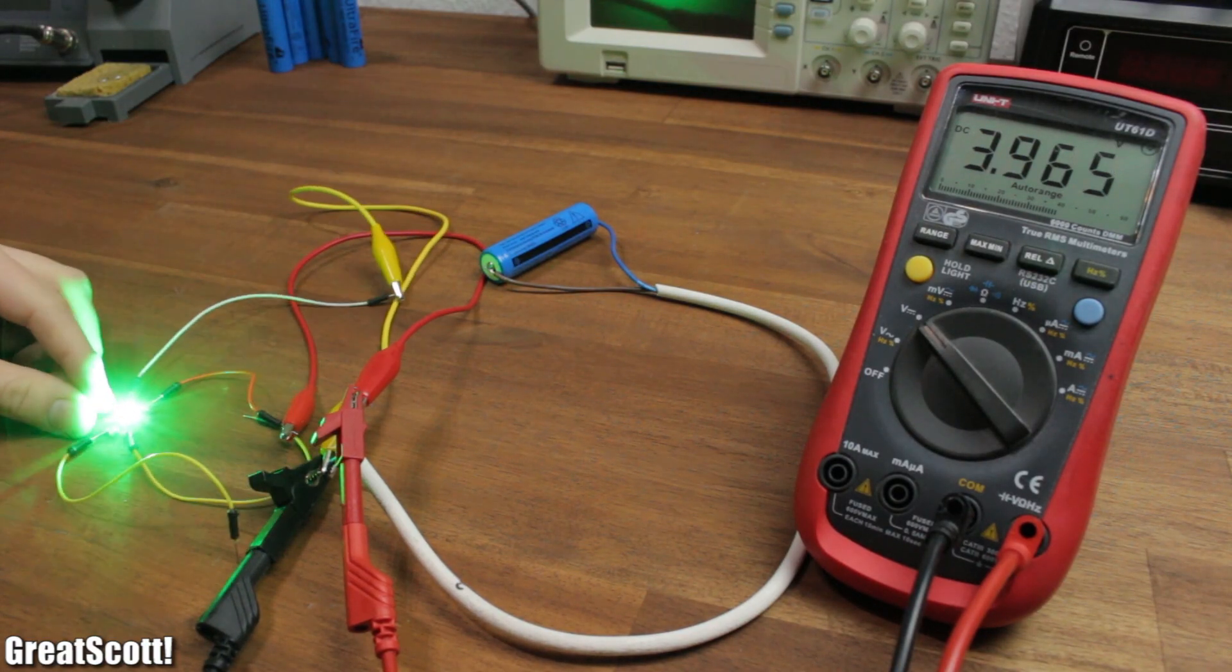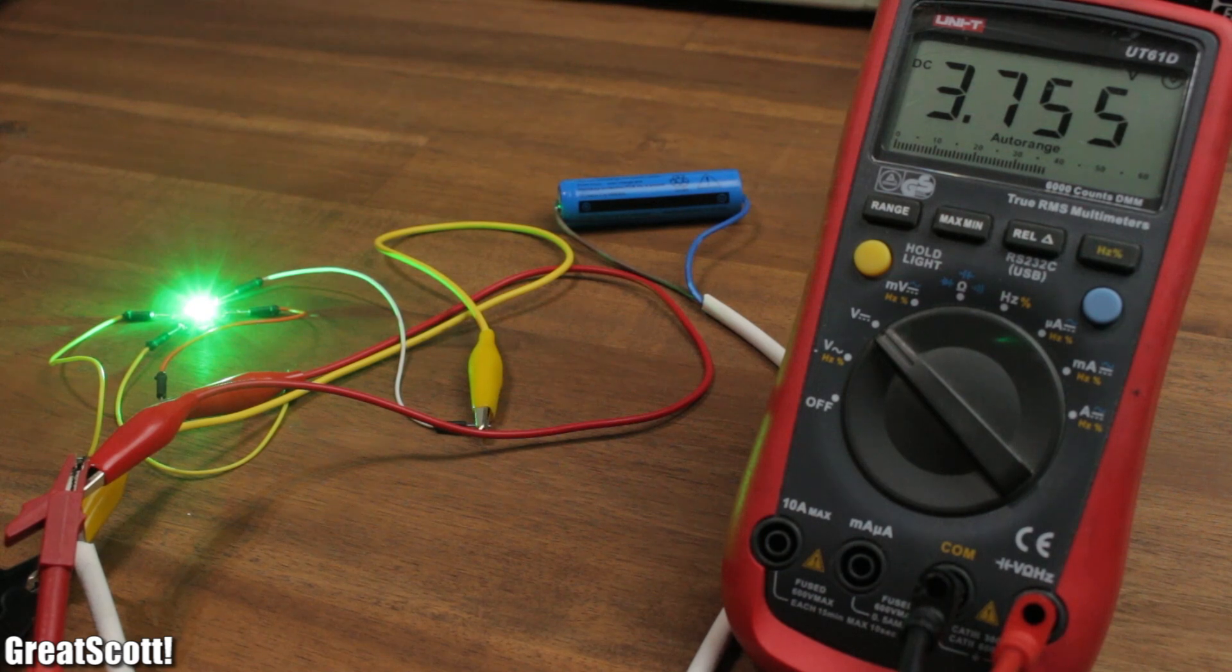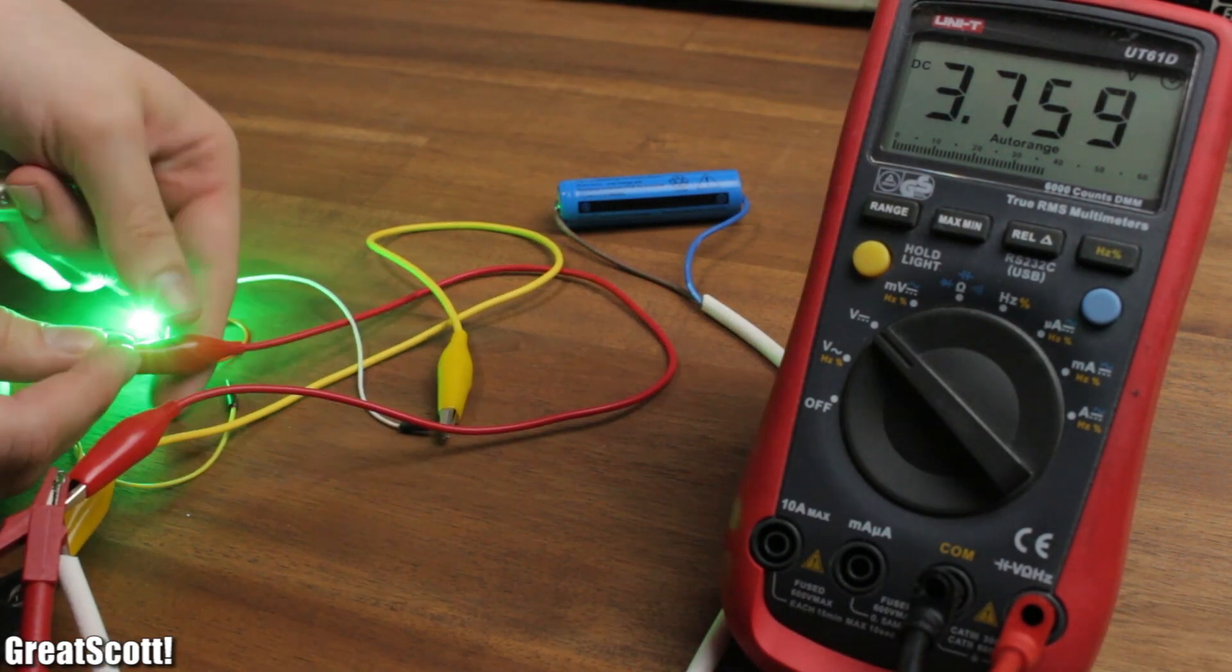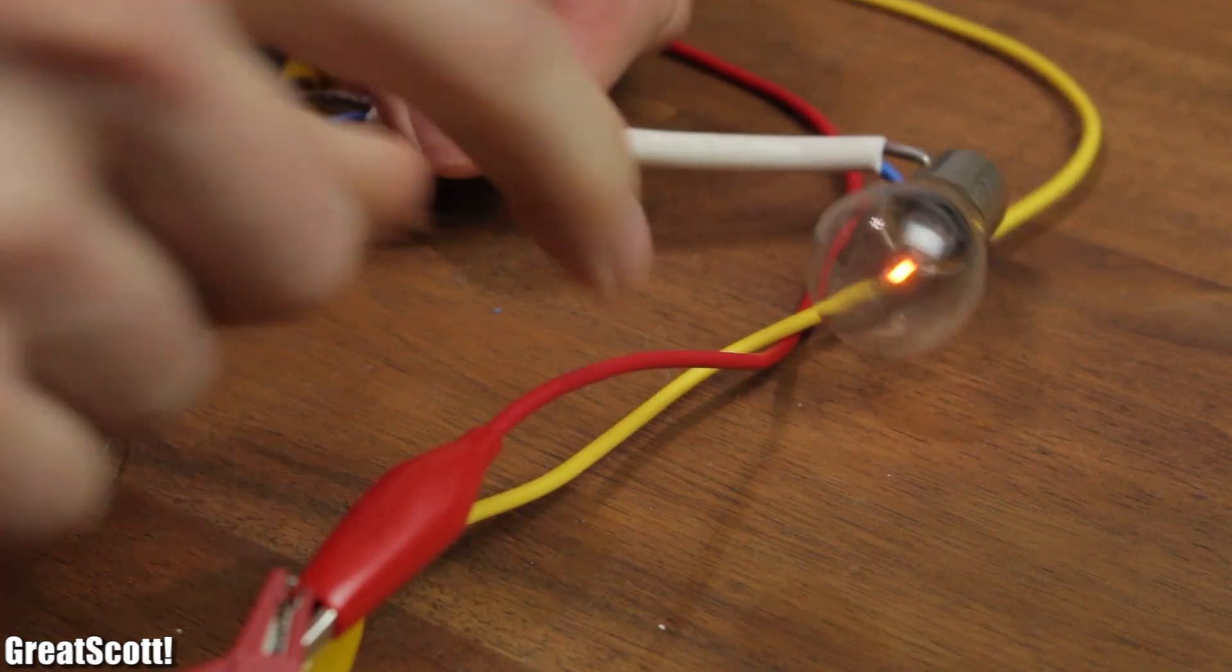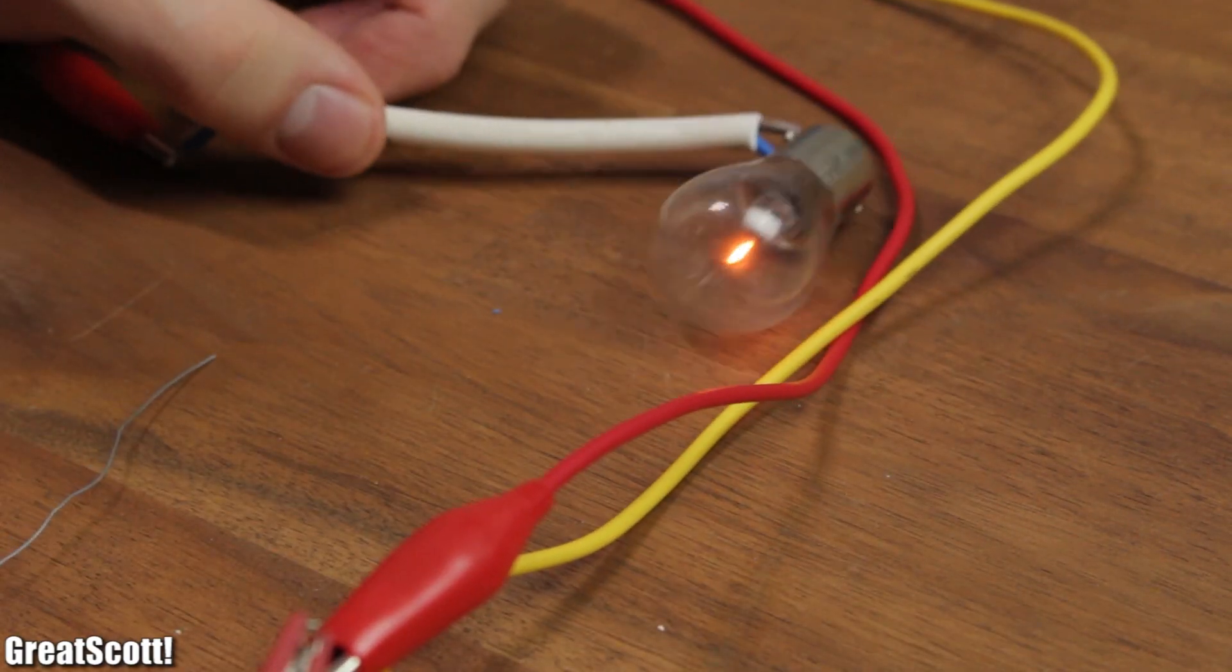At first I used this high power LED and monitored the voltage with my multimeter. But that was quite a small load, so I got this old fashioned bulb, which drew way more current and speeded up the process.